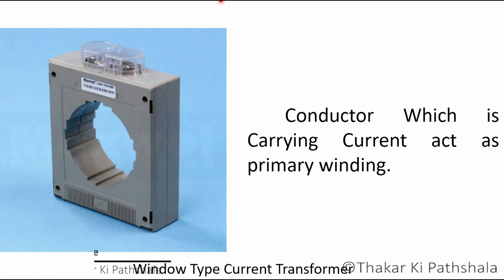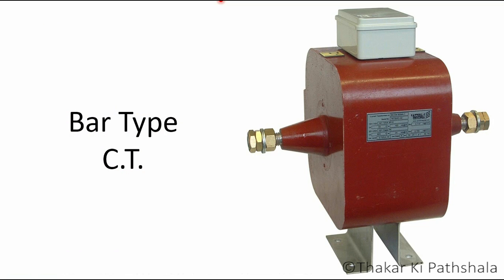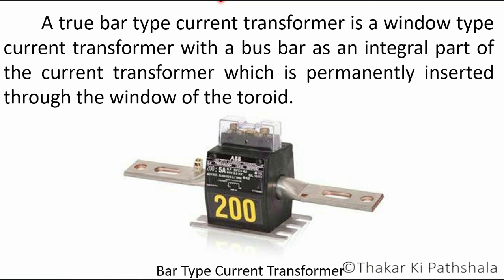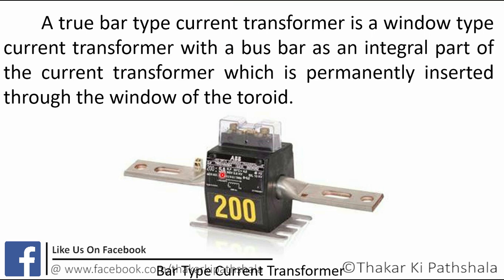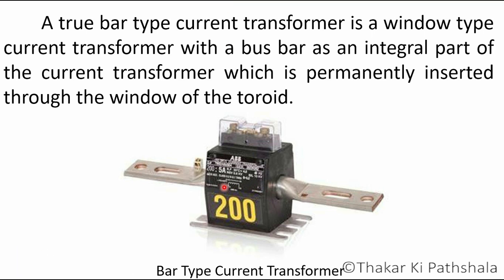Now it's time for final type, which is bar type. There is not much difference between bar type and window type current transformer. You can see from the image that only difference is that a true bar type current transformer is a window type current transformer with a busbar as an integral part of the current transformer, which is permanently inserted through the window of the toroid. Here busbar serves as a primary conductor.